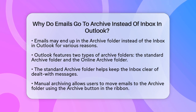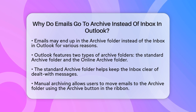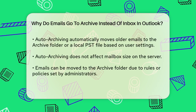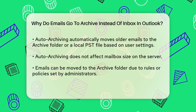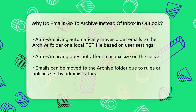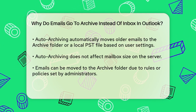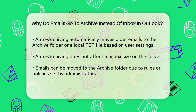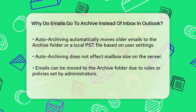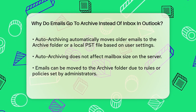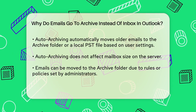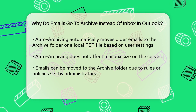When emails go to the Archive folder, it's because you or your settings have instructed Outlook to move them there. Here's how it typically happens. Manual Archiving: you can manually move emails to the Archive folder using the Archive button in the ribbon. This button is right next to the Delete button and simply moves the selected emails to the Archive folder without deleting them.